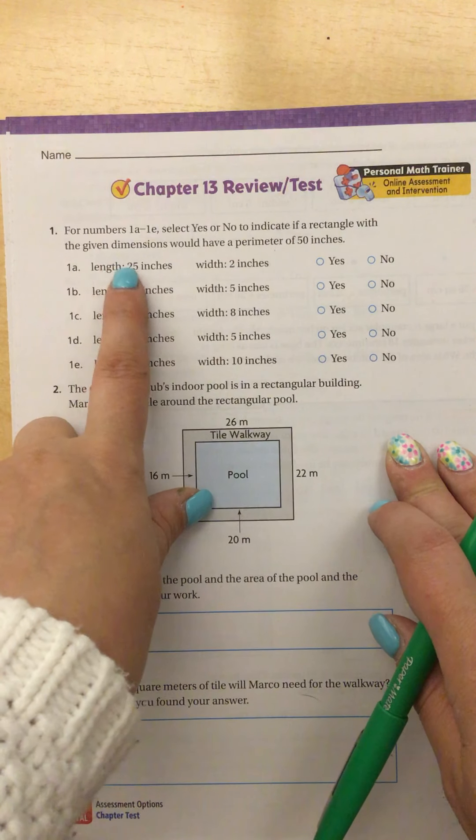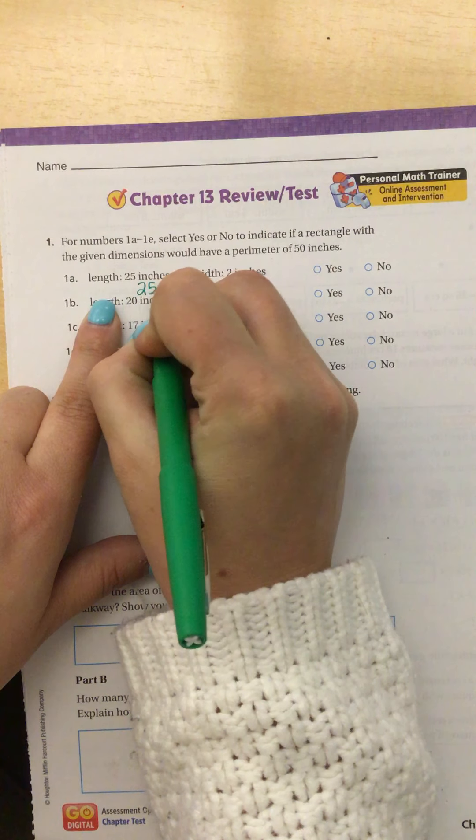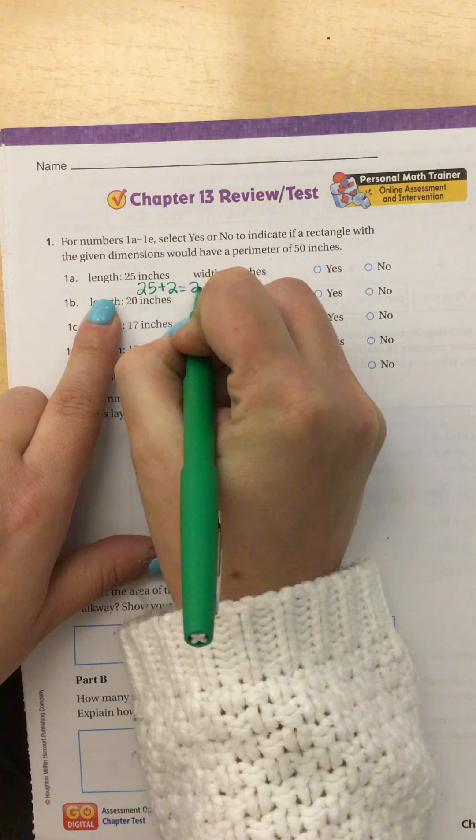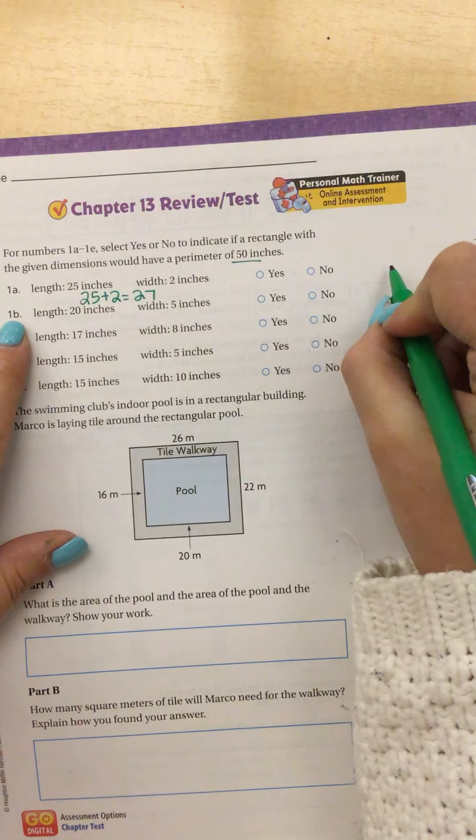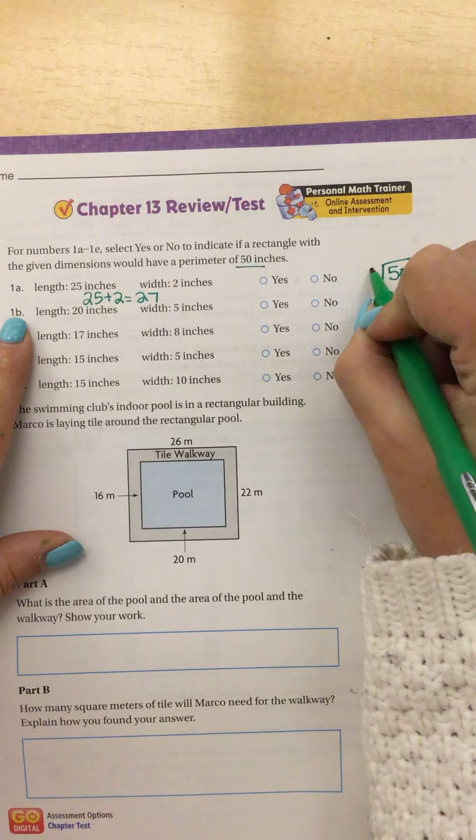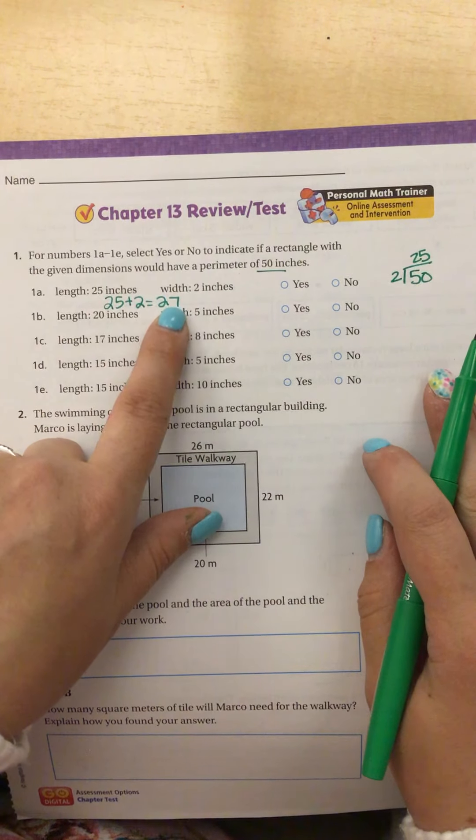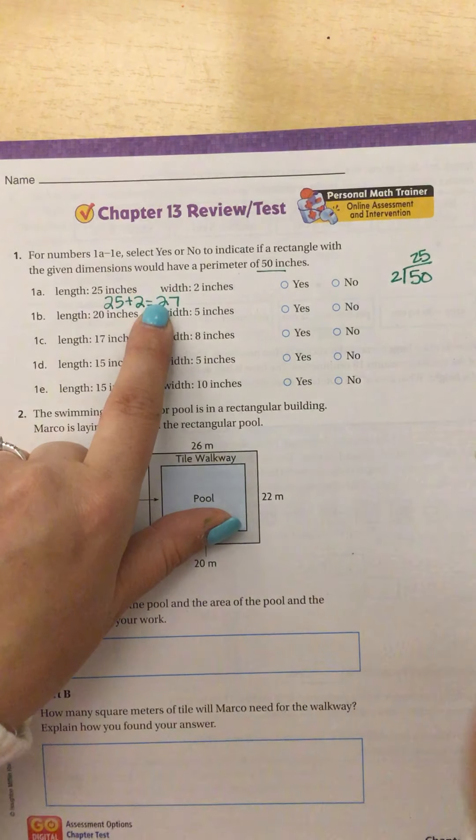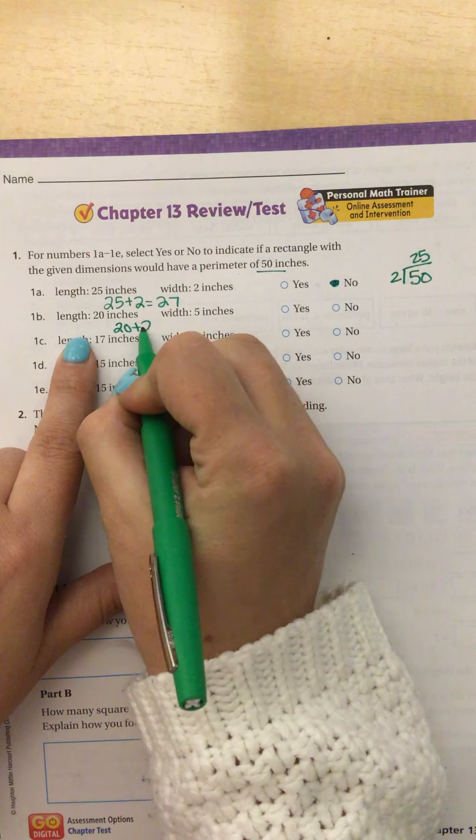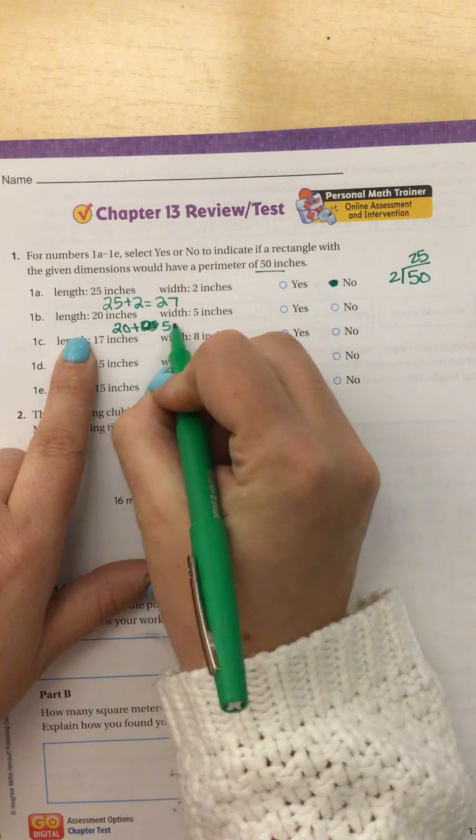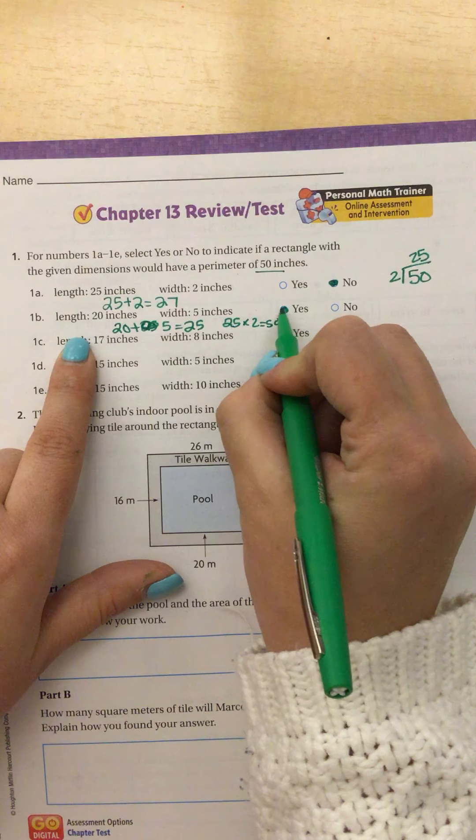So when we're doing perimeter, we're adding the length and the width and then multiplying by 2. So this one I have 25 plus 2 is 27. And I know that these would have to add up to 25 because 50 divided by 2 gives me 25. So if my length and my width, when I add them together one time, is more than 25, it would not have a perimeter of 50.